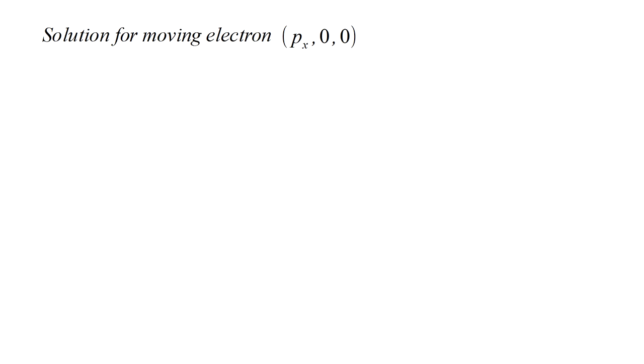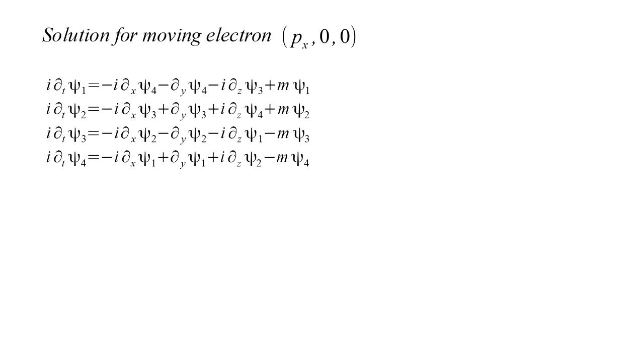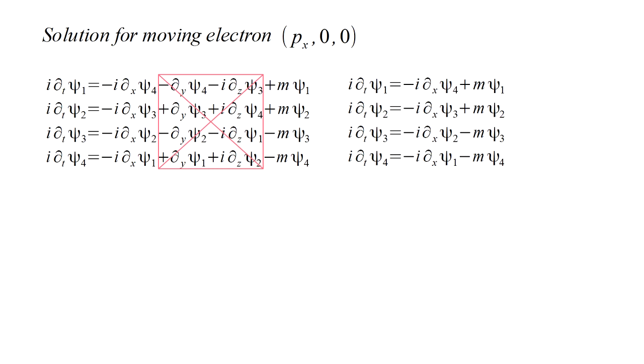Now we consider a moving electron. We take the momentum to be in the x direction. Looking at the complete set of equations and recalling that the slopes in y and z correspond to the y and z momenta, we can drop those terms since those momenta are zero. This leaves a somewhat reduced set of equations. Notice that, unlike the electron at rest case, these equations mix up the wavefunction components. Specifically, the first and fourth equations both involve the first and fourth components, while the second and third equations both involve the second and third components.